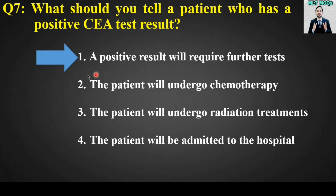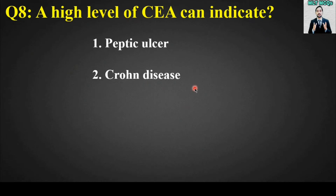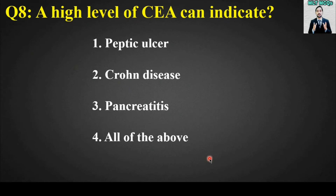MCQ number eight: A high level of CEA can indicate — options are peptic ulcer, Crohn's disease, pancreatitis, or all of the above. The right answer is option number four: a high level of CEA can indicate peptic ulcer, Crohn's disease, as well as pancreatitis.